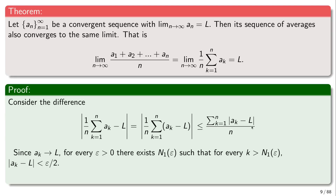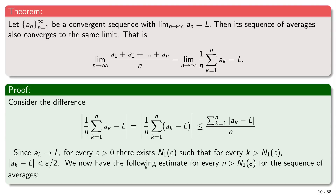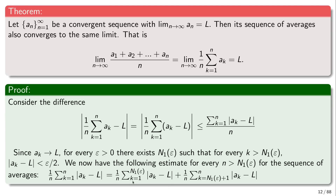Now I can break this sum into two parts. We're considering only values of n which are greater than n_1(epsilon). Then I can break the original sum into two parts: the first summation goes from 1 up to n_1, and the other part goes from n_1 + 1 up to n. This is useful because I already have an estimation on the second part — every element in that summation, according to the definition of n_1, is going to be smaller than epsilon/2. So at least that part is controllable and can be made as small as I please.